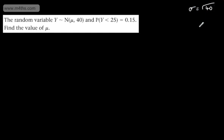And we've got now μ is equal to μ. So we're told now the probability that Y is less than 25 is going to be 0.15. And we need to find the value of μ.